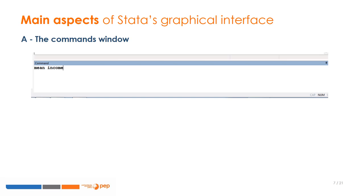The command window allows you to type a Stata command line and execute it by clicking on Enter. For instance, in the following example, the Stata command line is composed of two words: the first is the Stata command 'mean', and the second is the name of the variable, which in this example is 'income'.